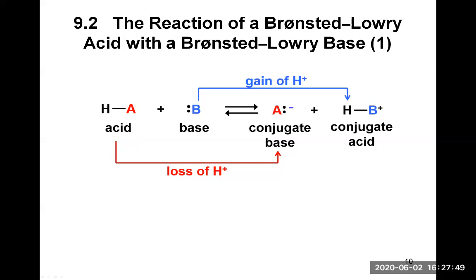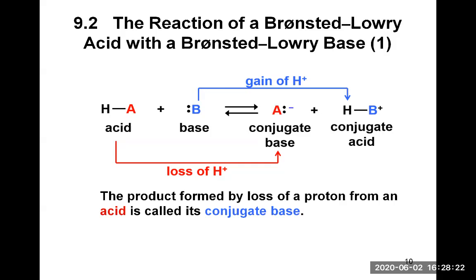The acid is a proton donor, so it will lose the H+. When the acid loses the H+, it becomes A- with the lone pair, because the bond between H and A stays with the A and makes a lone pair. A has a negative charge because it has an extra electron, and H leaves without any electrons — that's why it's H+. The product formed by the loss of a proton from an acid is called its conjugate base. A- is the conjugate base of the acid HA; the only difference between the two is an H+.